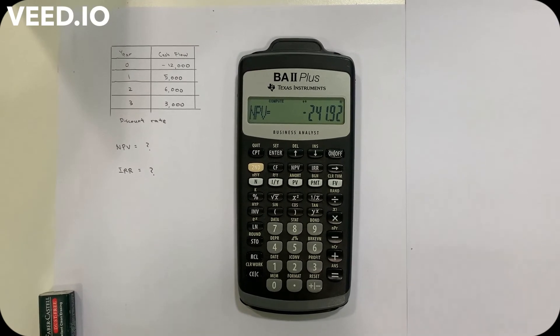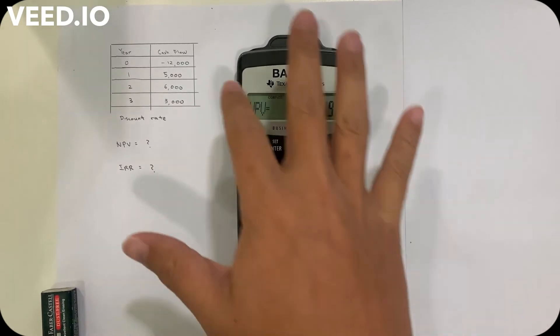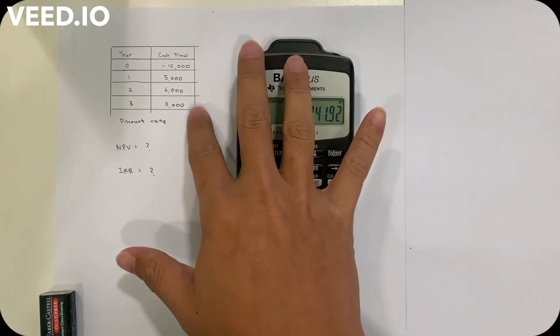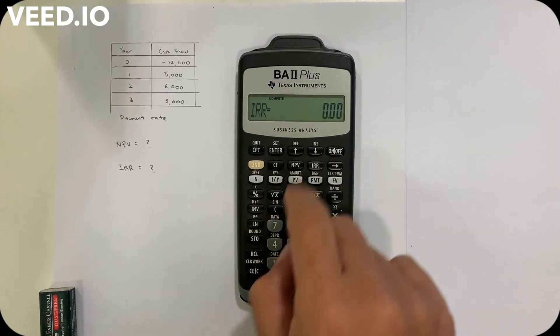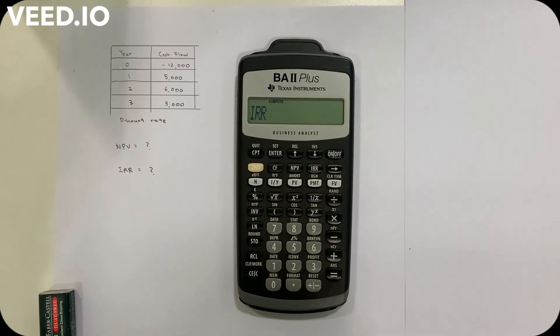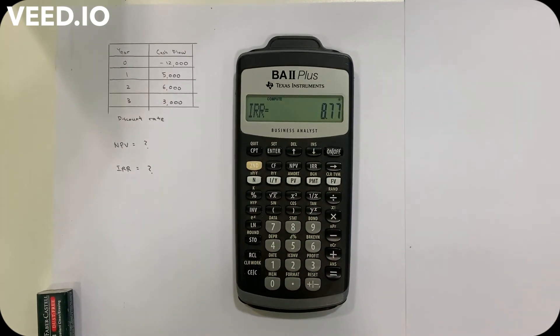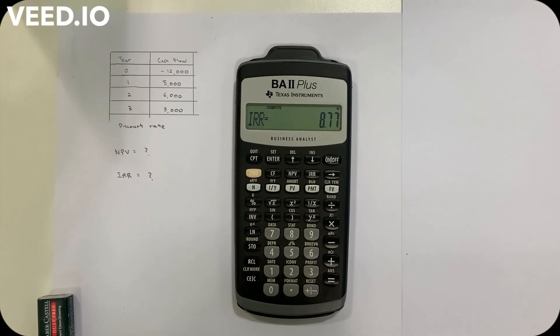To get the IRR of this project, since we already keyed in all the cash flow, I press the IRR button and press CPT, and they will tell me the internal rate of return.